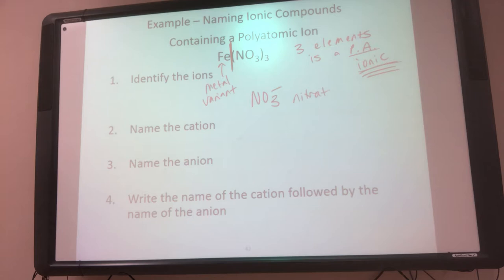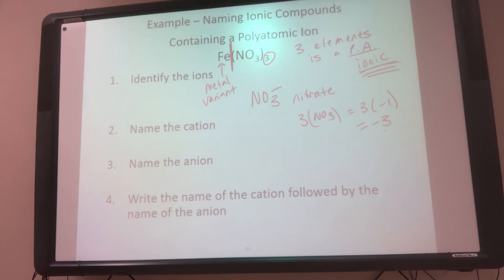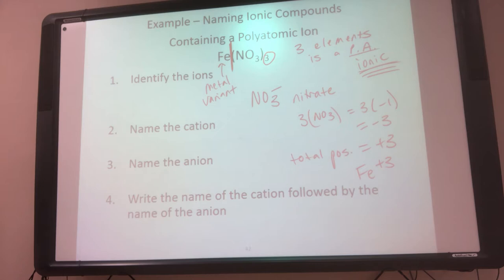Now I have to figure out the charge on Fe. I have three NO3's, and each is a negative one, so my total negative charge is negative three. The compound is neutral, so my total positive charge is positive three. I only have one Fe, so each Fe is plus three. This is the same process we used with a non-metal — use the anion to figure out the cation's charge. So Fe is iron, and since it's a variant metal, we put the charge in Roman numerals: iron three.